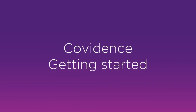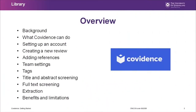Welcome to the Covidence Getting Started class, which will show you how to use systematic review software, Covidence, to get the best out of your systematic review. Here's an overview of what we'll cover today: a quick rundown of Covidence and what it does, how to set up an account, how to create a new review, how to add references, team settings, tags, screening articles at both title and abstract and full text stages, and a look at extracting data and the benefits and limitations of the software.